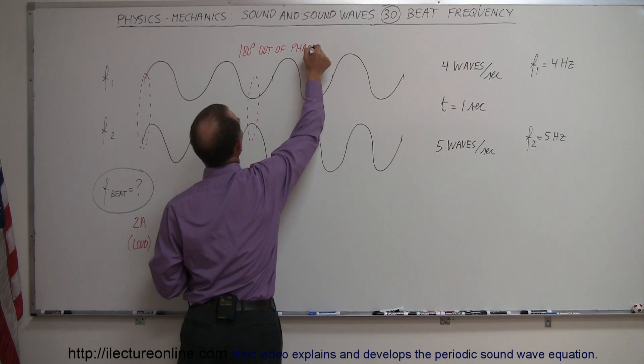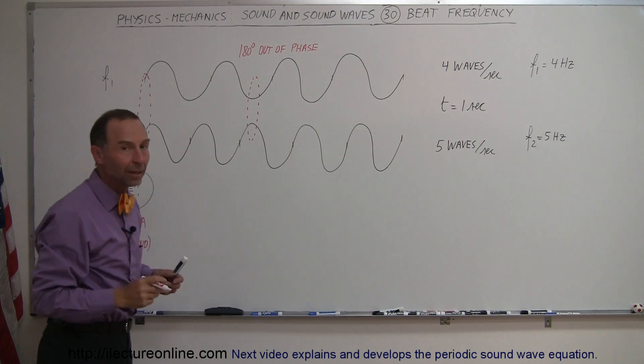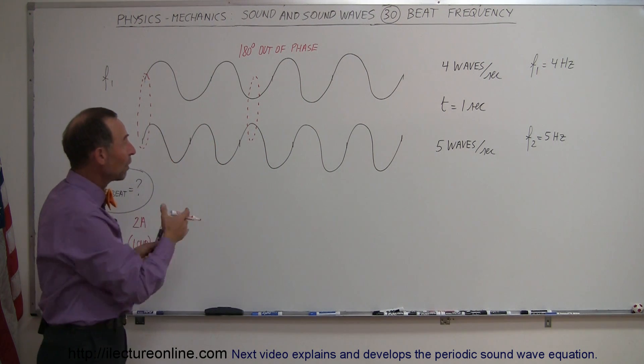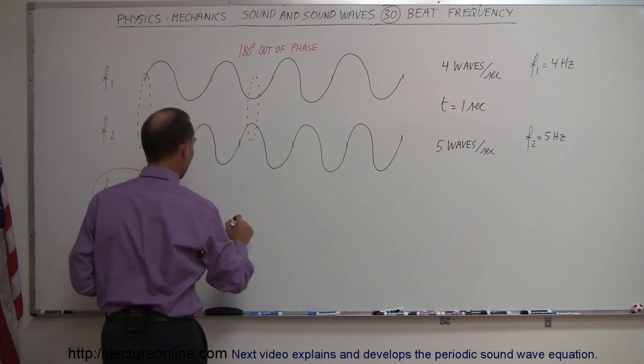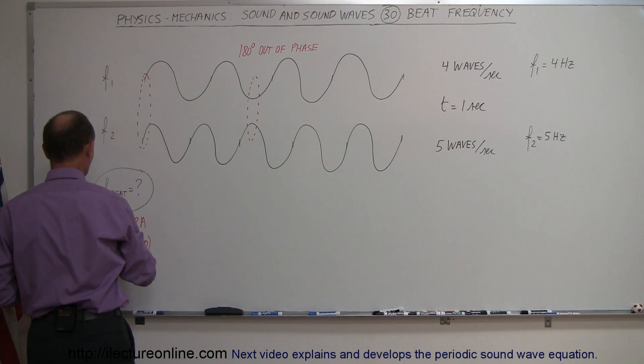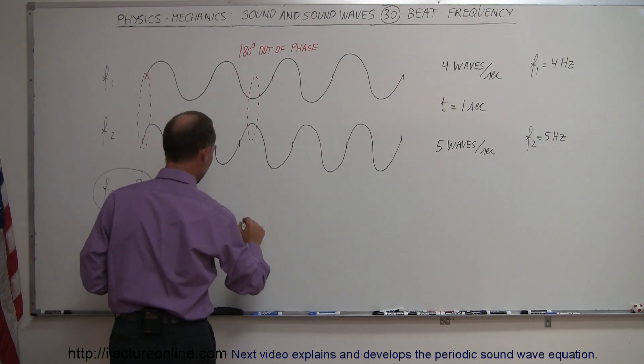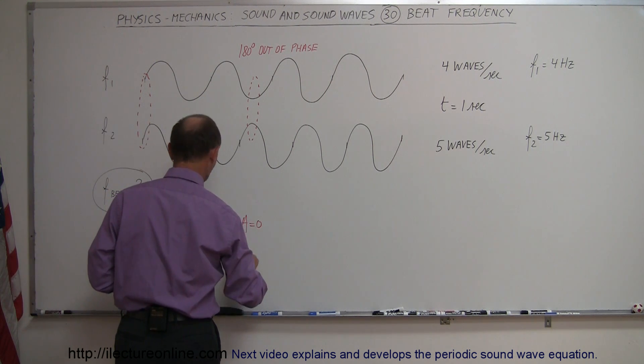Which means if a listener were to be right at this location at that moment in time, the person would hear nothing because the two waves would interfere with each other, therefore they would cancel each other out. So the amplitude is zero. So you hear nothing, no sound.